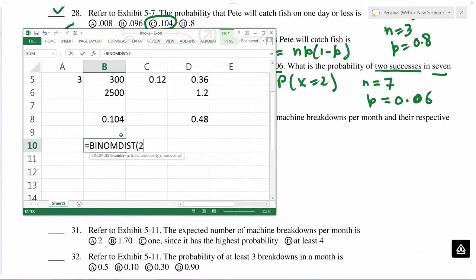X equals 2, so 2 here. N is 7, p is 0.06, and because we are calculating exactly at 2, we would say false. 0.055.